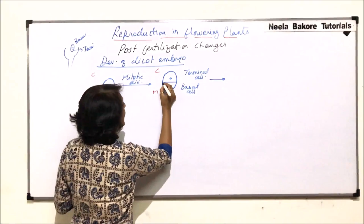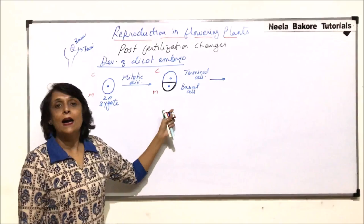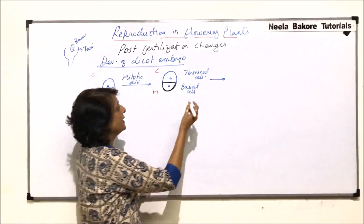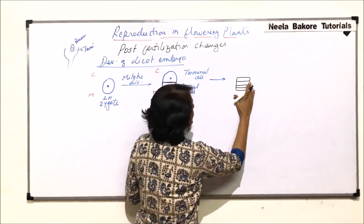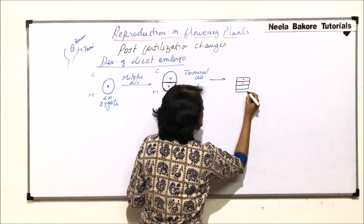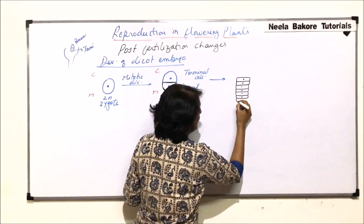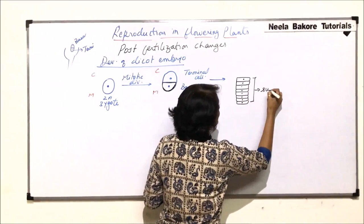For the further divisions we give different colors to these cells so it is easier to understand which cell gives rise to which part. The basal cell undergoes many transverse divisions. Starting from the original basal cell: one transverse division gives two cells, both undergo transverse division to give four cells, and so on. These transverse divisions in the basal cell result in the formation of a long structure.